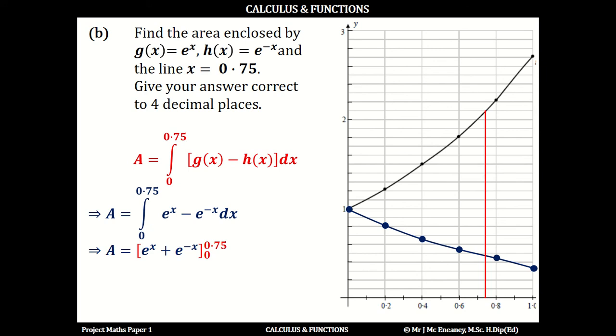Substituting 0.75, we get e^0.75 + e^(-0.75). Then we subtract the value at 0: e^0 + e^0. If you put all of that into your calculator, this gives an area of 0.5894.